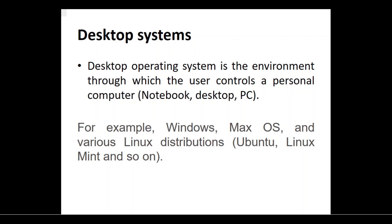A desktop operating system is the environment through which the user controls the personal computer. Computers we use at home or in educational institutes — desktop computers, laptops, and notebooks — are all considered desktop systems. Examples of desktop operating systems include Windows, Mac OS, Linux distributions, and Ubuntu.